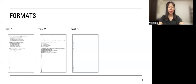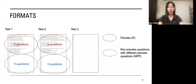In my research, participants tested three formats to investigate my research questions. They are: Preview questions—hereinafter, this is coded P, which is circled in red; Non-preview questions—hereinafter, this is called NPP; and Non-preview questions with different preview questions—hereinafter, this is called NPA, marked in green circle.